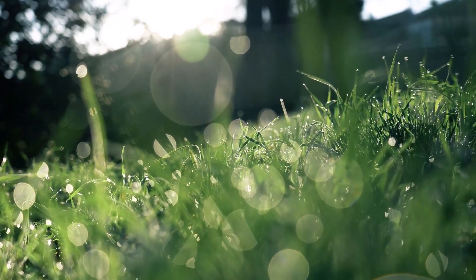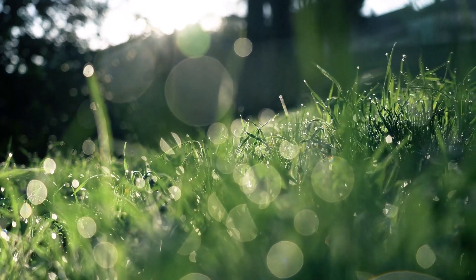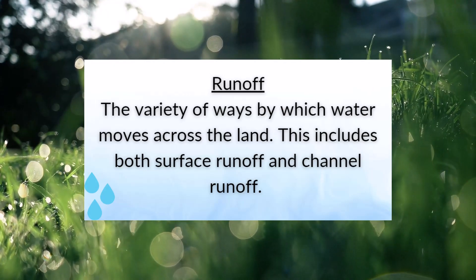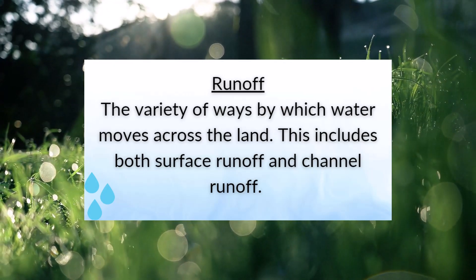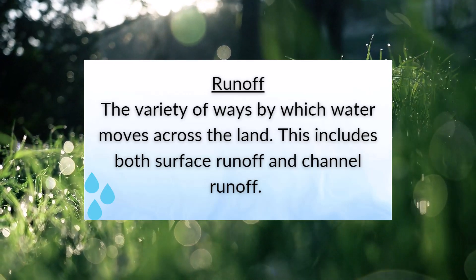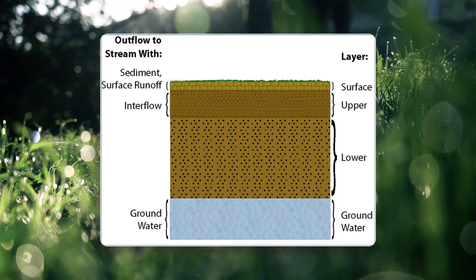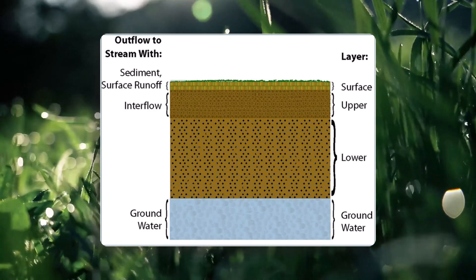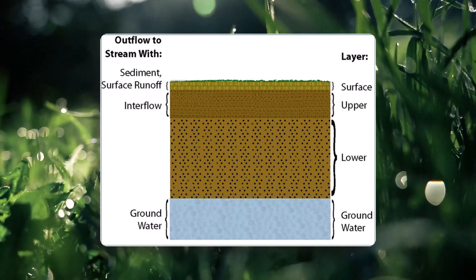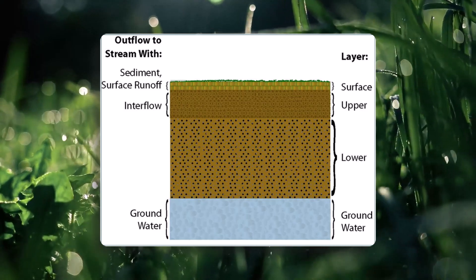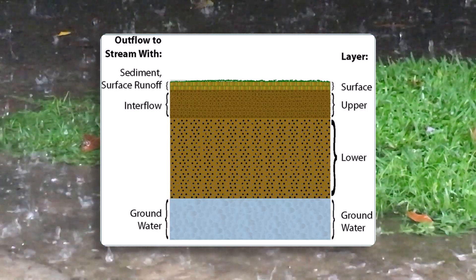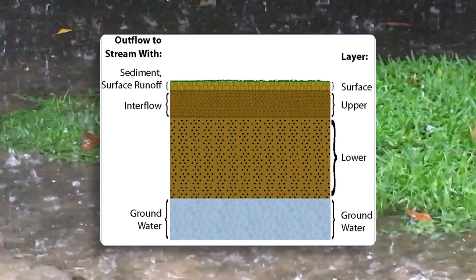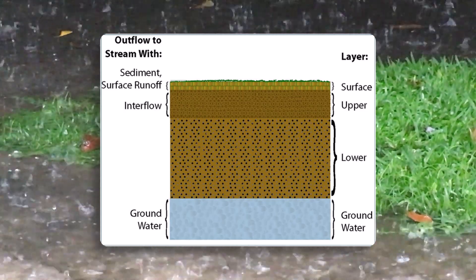Eventually, that precipitation turns into runoff, which is the variety of ways by which water moves across the land. This includes both surface runoff and channel runoff. You can see in the stream flow diagram here how the water is moving through the surface and how it infiltrates into the soil. It can be divided into three main points: surface runoff, which is water running off the land surface; interflow, which is runoff that has infiltrated into the subsurface and is moving towards a water body; and groundwater, which is slower base flow that has infiltrated deep into the soil layer.